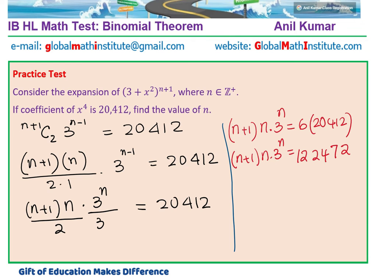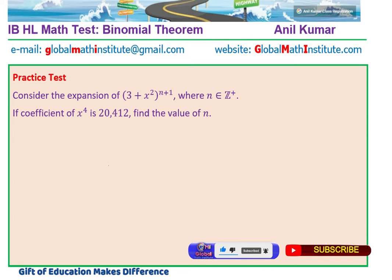So now, the idea is to write this particular number with 3 to the power of something. Then, we can actually find the answer. So let us write 122,472 as powers of 3.